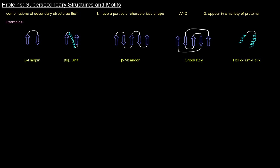The Greek key is very similar to the beta meander in that it has anti-parallel beta pleated sheets, but the connection is different. Instead of going directly to the adjacent strand, we start from the far right, go up, skip to a non-adjacent strand, then come back, and loop all the way over to the left. That specific combination and connectivity is called a Greek key.